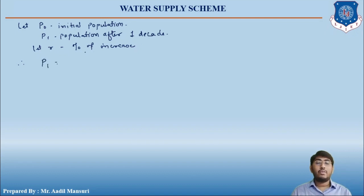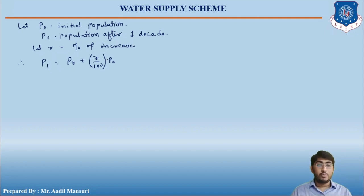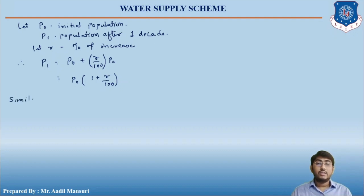The population after one decade will be the initial population plus some percentage increase of the initial population. This will be equal to P0 into (1 + r/100). Similarly, if we want to find out the population after two decades: